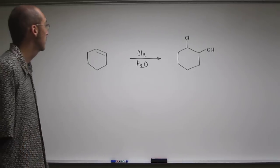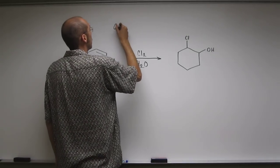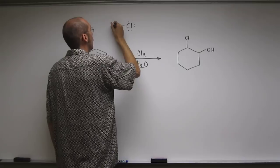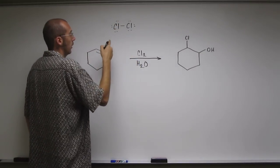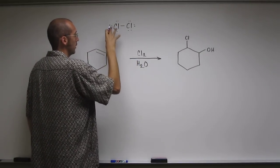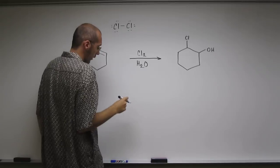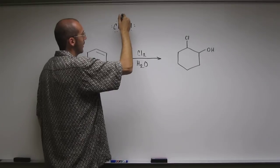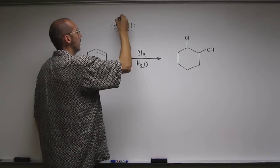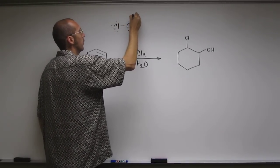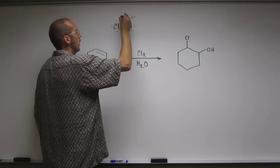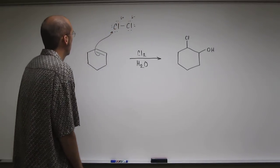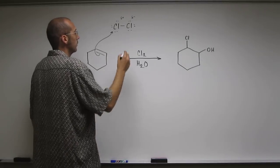So we can do the mechanism too. Cl2, remember it looks like that. When it gets into the presence of an alkene, it's going to make this have an instantaneous dipole. So this chlorine will be kind of partially positive, that one will be partially negative, and that will induce that alkene to attack it.